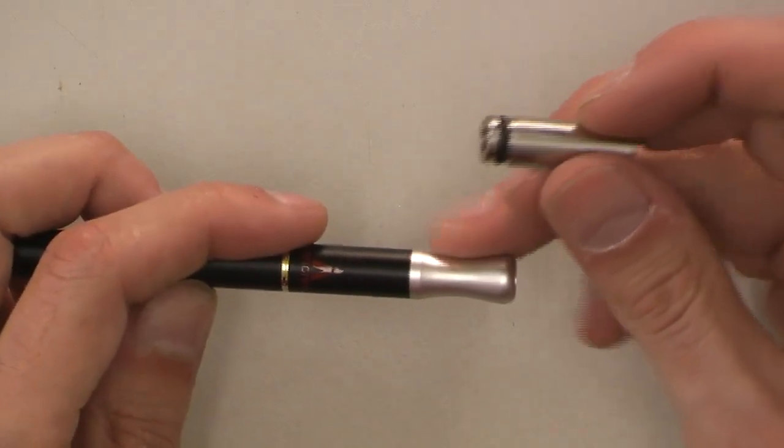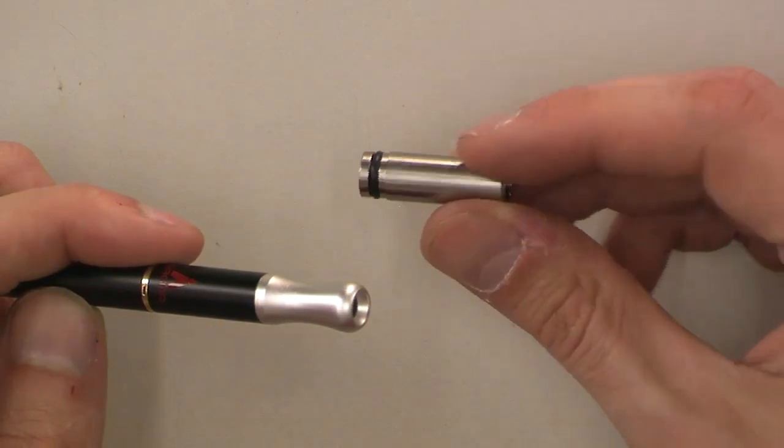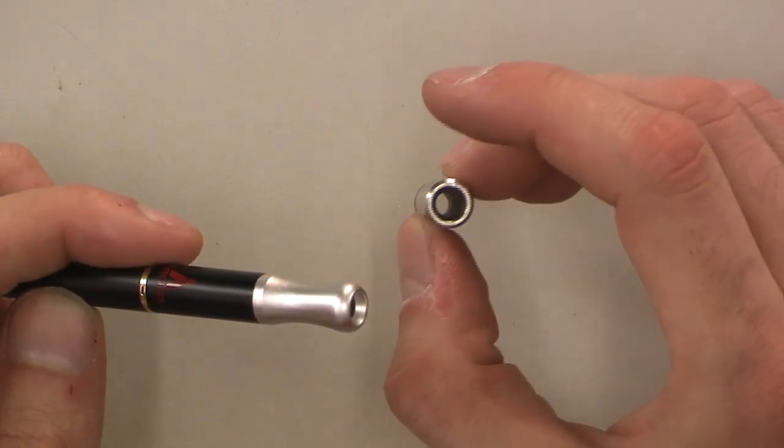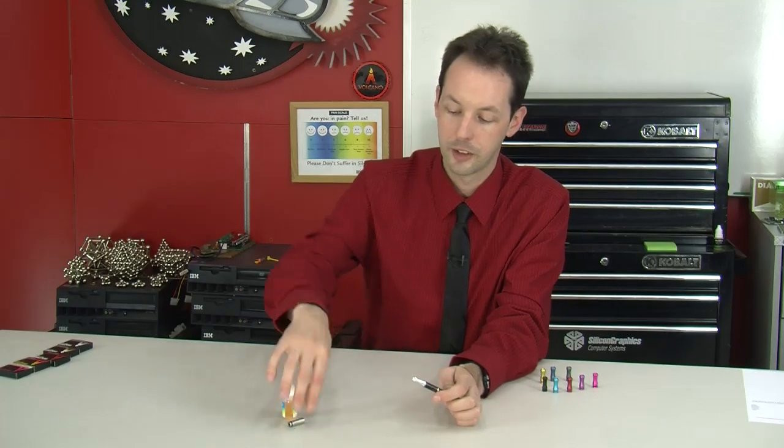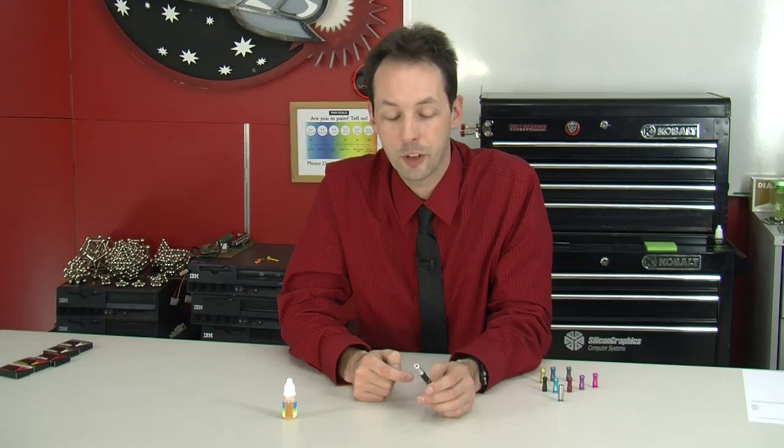So there's your matte anodized aluminum one, and then there's this really nifty one that I think is stainless. I could be wrong. I don't know. It feels like stainless, it's way heavier. So yeah, it's everything you need to know about drip tips and how to use them.